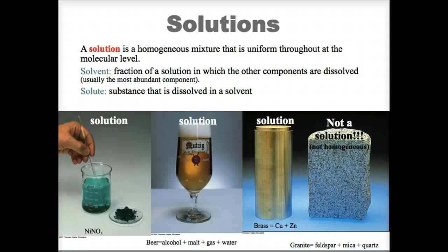Chemists define a solution as a homogeneous mixture of uniform composition. Solutions are made up of solvents and solutes. Solvents are substances capable of dissolving other substances and are usually present in the greatest amount. Solutes, on the other hand, are the substances dissolved in the solvent and are usually present in the lesser amount.